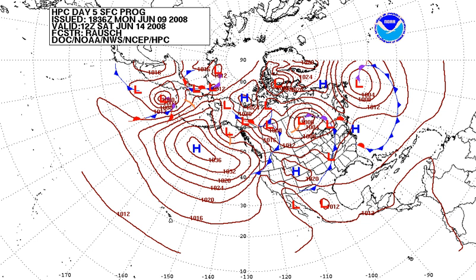In aviation weather reports (METAR), QNH is transmitted around the world in millibars or hectopascals — 1 hectopascal equals 1 millibar — except in the United States, Canada, and Colombia, where it is reported in inches of mercury to two decimal places. The United States and Canada also report sea level pressure (SLP), adjusted to sea level by a different method, in the remarks section in hectopascals or millibars.